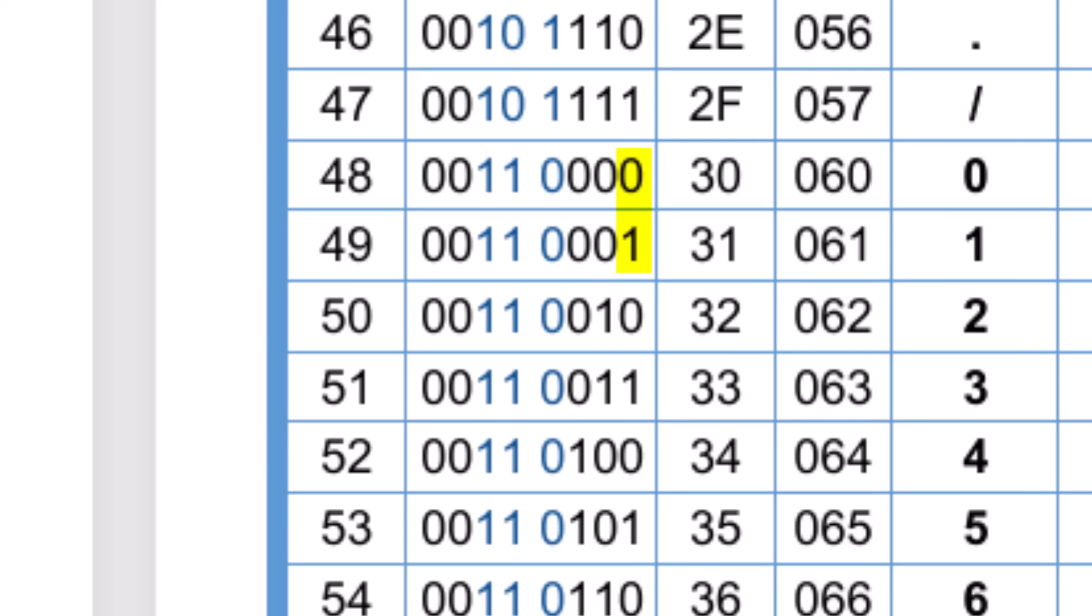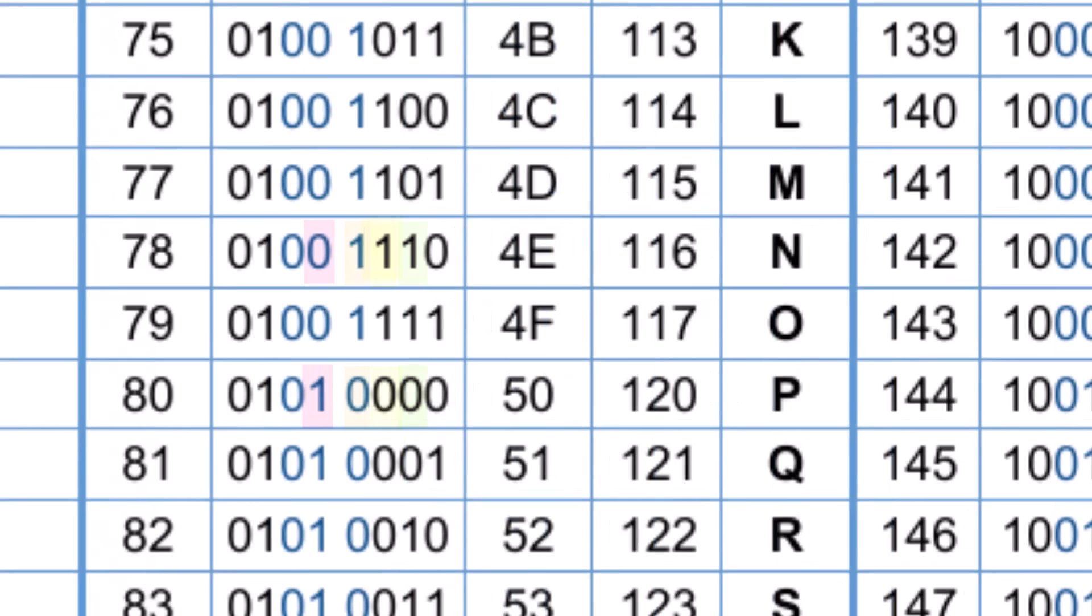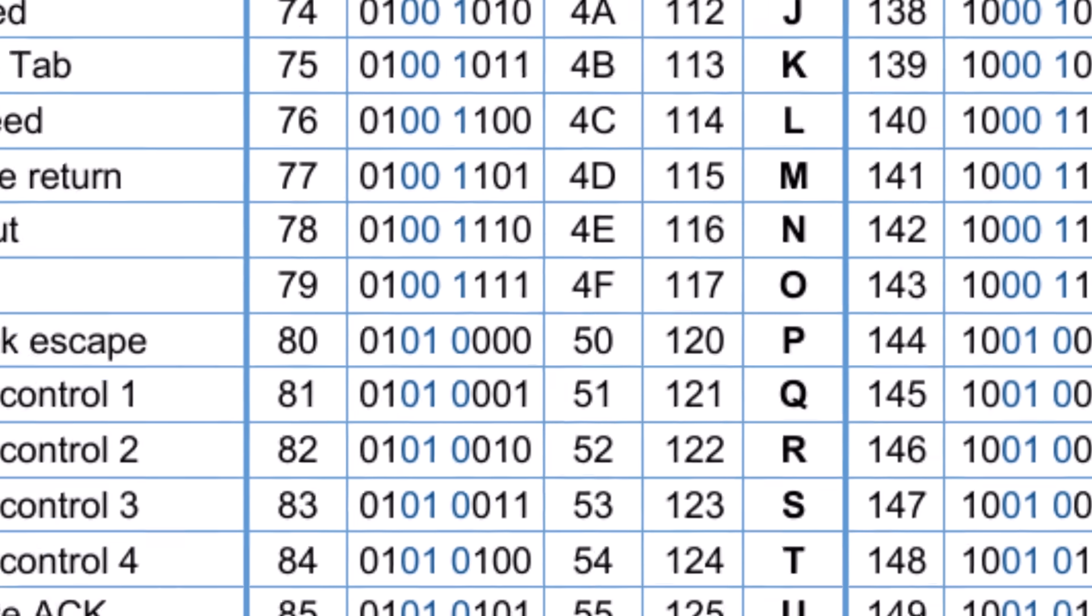Since there's only one bit difference, a single bit error would be, you know, in all likelihood, completely missed, where with P and N, there's a 4-bit difference between those in the ASCII table. So that makes an undiscovered single bit error that more unlikely to not be caught.